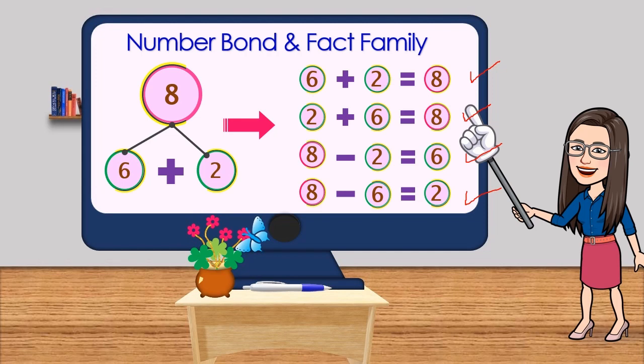Now look how the relationship of addition and subtraction is being shown in the fact family. These two also explain the commutative property of addition - whether the order is changed, the value is still the same.